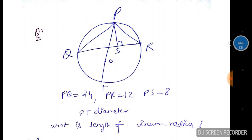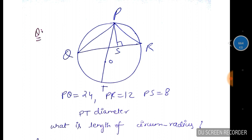Now this circle - in this circle PQ equals 24, PR equals 12, and PS equals 8. PS is perpendicular to QR. What is the length of circum-radius? And PT diameter - you have to find it from the center.